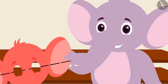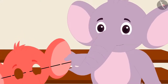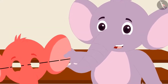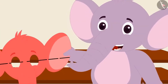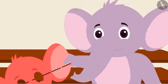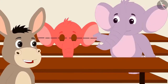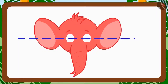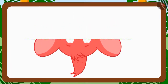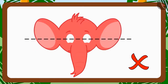Appu gets excited and says, 'Bola, I have made a mask of my face on this sheet and also drawn a line. Can you tell me how I will know if this line is dividing my mask into two similar parts or not?' 'This is very easy. If you want to know whether a dotted line can divide an image into two similar parts, just fold the image along the dotted line. If both parts coincide, then the line is dividing the image into two similar parts. This is the reason your line is not dividing your mask into two similar parts.'